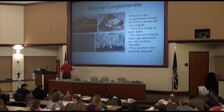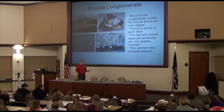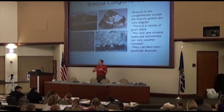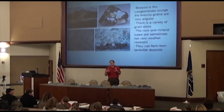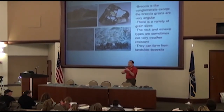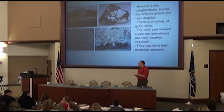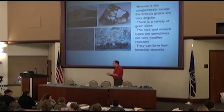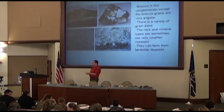Sometimes breccias are made out of materials that are not very weather-resistant, like feldspar or other things that break down pretty easily and wouldn't usually be tumbled in a river. Conglomerate is often made of quartz, which is very weather-resistant. Breccias can sometimes be made out of limestone and other things that weather pretty quickly.